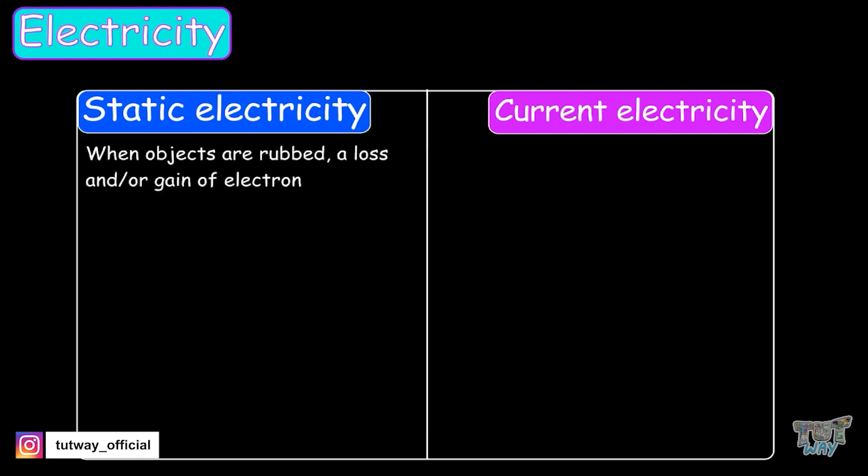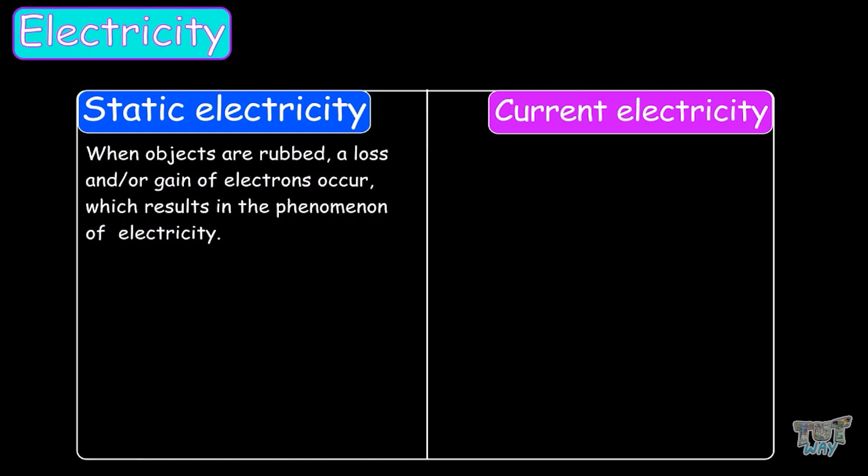When objects are rubbed, a loss or gain of electrons occurs, which results in the phenomenon of static electricity. And current electricity is generated by batteries and power plants.